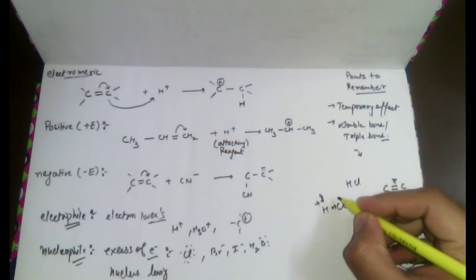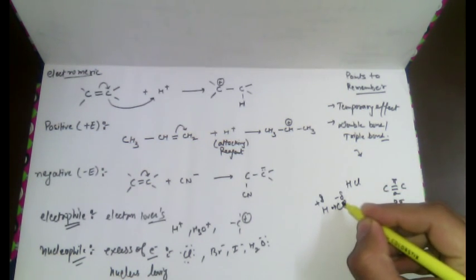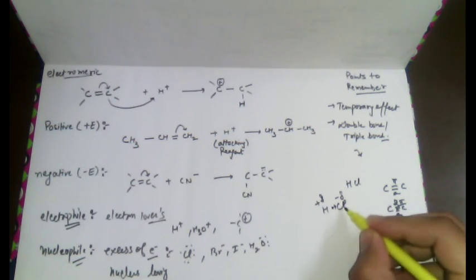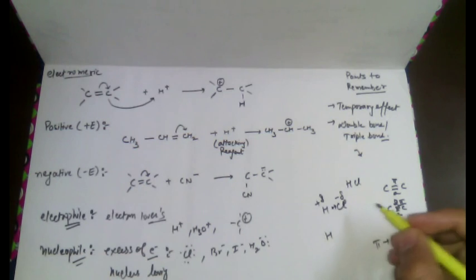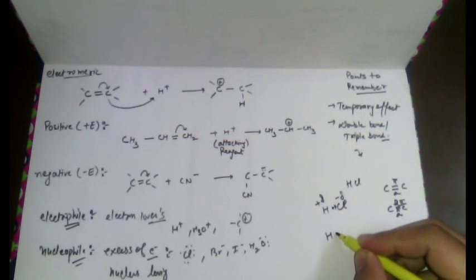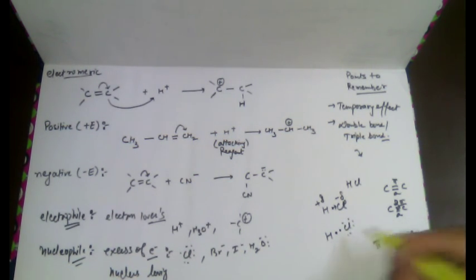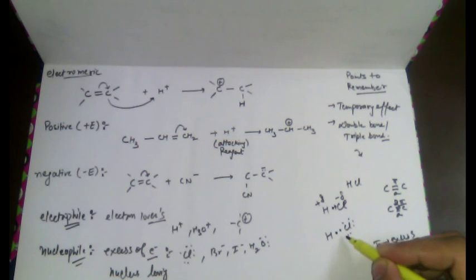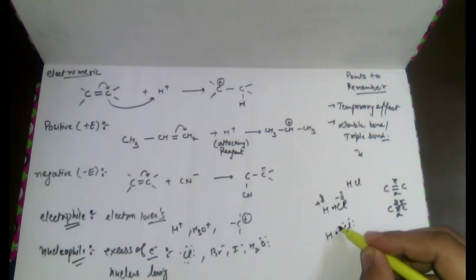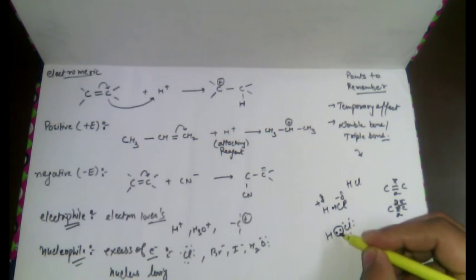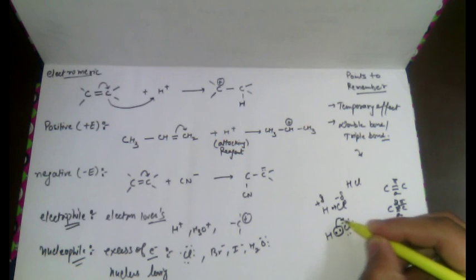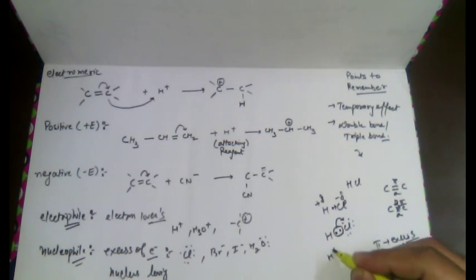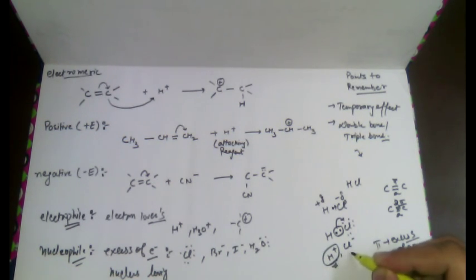The shared electrons get attracted towards chlorine due to its higher electron affinity, causing hydrogen to acquire a partial positive charge and chlorine to acquire a partial negative charge. When bond cleavage takes place, chlorine detaches both electrons from hydrogen towards itself, causing the formation of an electrophile (H⁺) and a nucleophile (Cl⁻).